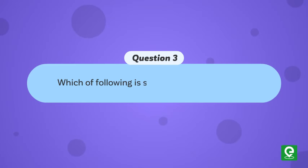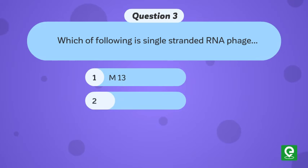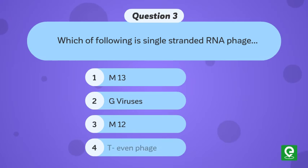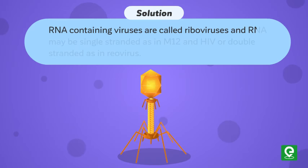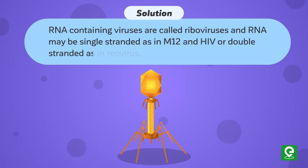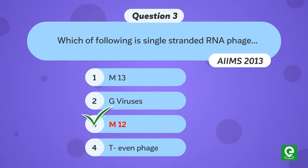Question three: which of the following is a single-stranded RNA phage? — (1) M13, (2) G viruses, (3) M12, or (4) T-even phage. This question was asked in AIIMS 2013. Solution: RNA-containing viruses are also called ribo viruses. RNA may be single-stranded, as in M12 and HIV, or double-stranded, as in reovirus. Hence option three is correct.